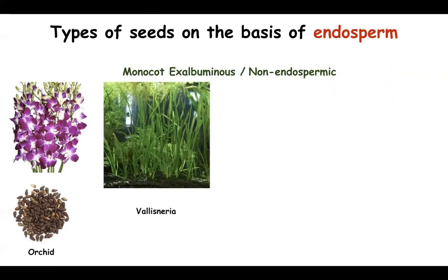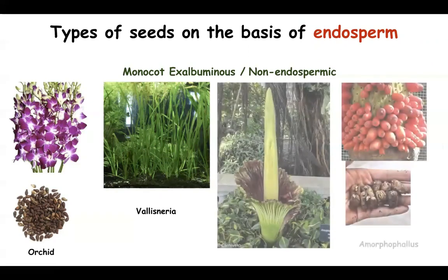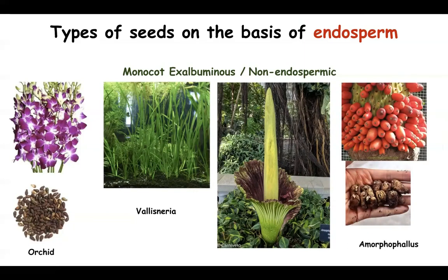Other monocot non-endospermic seeds include Vallisneria seeds — Vallisneria is a submerged hydrophyte, a plant growing in water. Amorphophallus seeds also have no endosperm; this flower is one of the large flowers in the plant kingdom. In all these cases, since they are monocots, only one single cotyledon is present, and the cotyledon stores food.